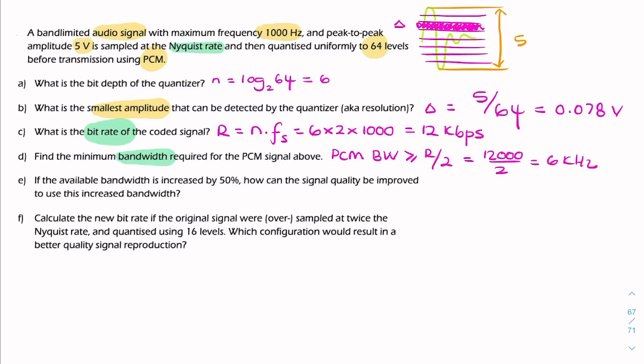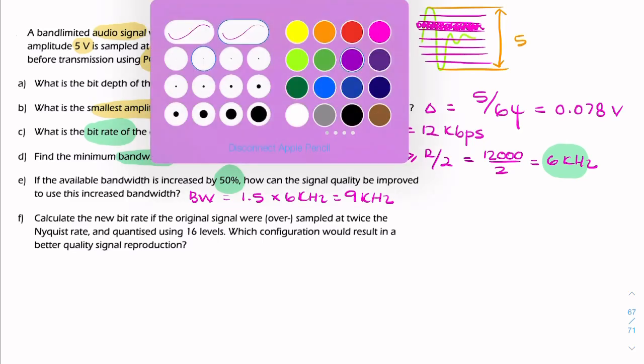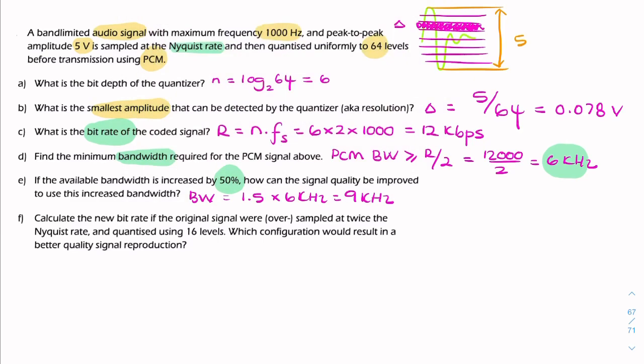Now for the next part, we're told that we're now allowed 50% more bandwidth. So that means we're allowed 50% more than the 6 kilohertz. So our new bandwidth is 1.5 times the 6 kilohertz. So that's 9 kilohertz. And the question is, how can the signal quality be improved? How can we use that new bandwidth? What can we do to improve the quality of the signal to make use of this additional bandwidth?